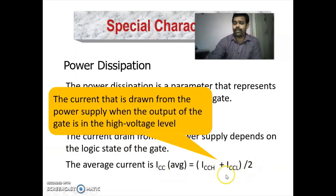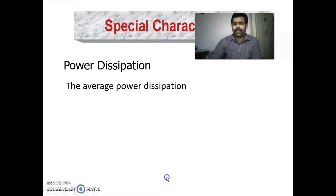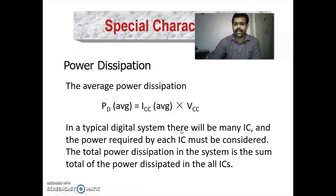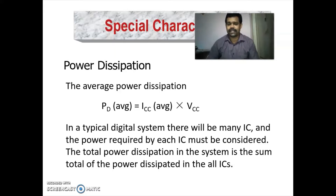The average current IC equals (ICCH + ICCL) / 2, where ICCH is the current drawn when the output is at high level and ICCL is the current drawn when the output is at low level. The average power dissipation PD(avg) = ICC(avg) × VCC. In a digital system with many ICs, the total power dissipation is the sum of power dissipated by all ICs.